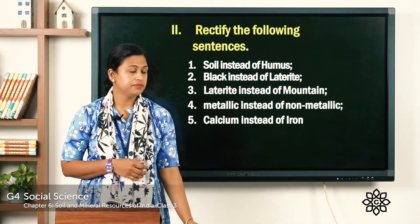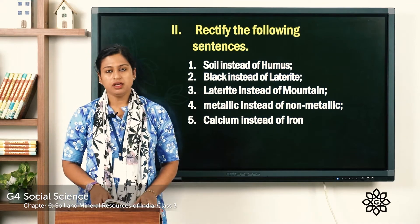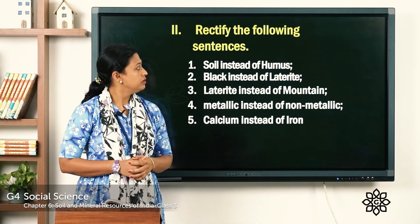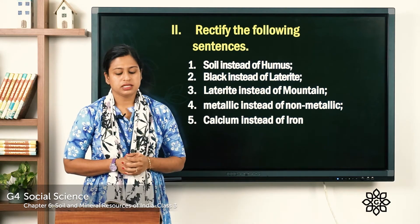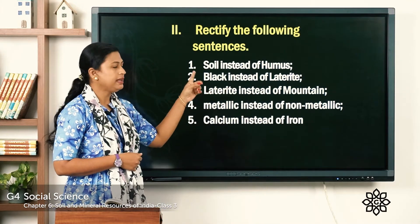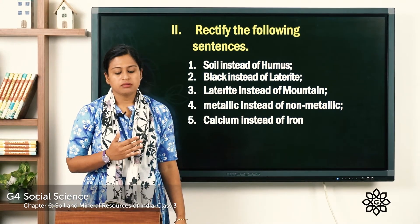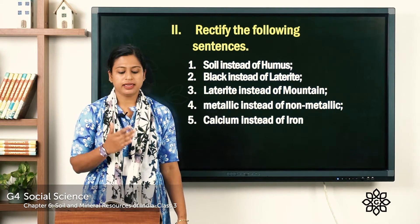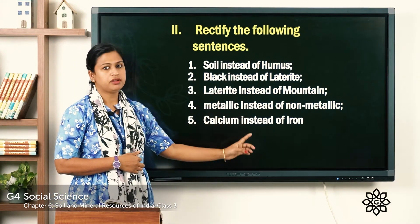Now let's check the answers. The first one — humus is the top layer of the earth's surface — you have to write soil instead of humus. The second one — laterite soil is dark grey or black in colour — you have to write black cotton soil instead of laterite soil. The third one — mountain soil is mainly found in areas of Karnataka, Kerala and Tamil Nadu — you have to write laterite instead of mountain.